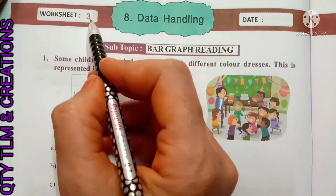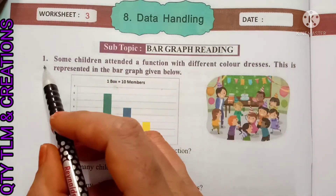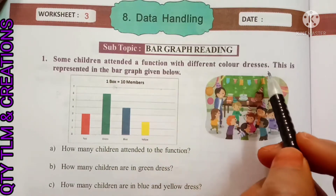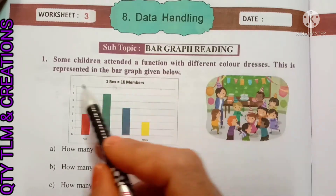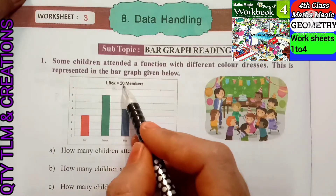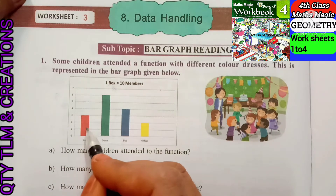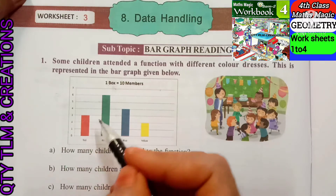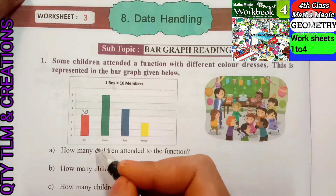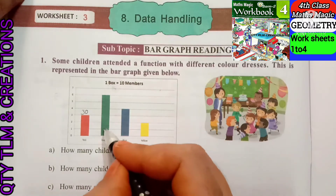Next, worksheet number 3, subtopic bar graph reading. First question: some children attended a function with different color dresses, represented in a bar graph. One box equals 10 members. Red dress bar shows 3 boxes, so 3 tens are 30 students wore red dress.